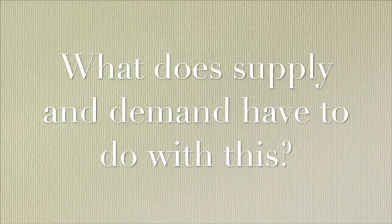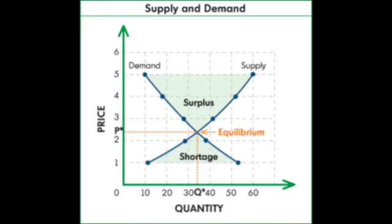Great question. What does supply and demand have to do with this? Supply and demand can actually be shown on a graph, and we can use this graph to figure out why a bottle of water is more expensive than an ice cream.